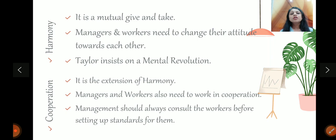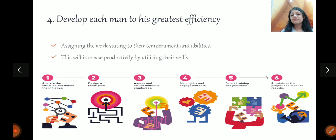These were the three principles. And last principle is, develop each man to his greatest efficiency. Taylor was of very scientifically, analytical kind of a mind. He said, for each worker, build a specialization. For the worker, whichever work they specialize in, let them do that work, so that they reach the greatest of efficiencies. Assign the work suiting to their abilities, or their temperament. This will increase your productivity. So, these were the four principles given by Taylor.